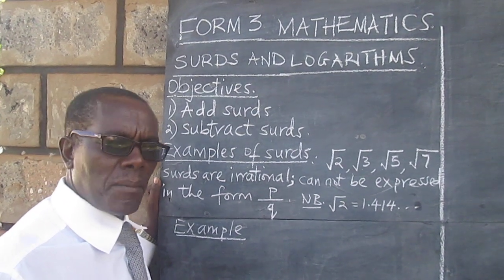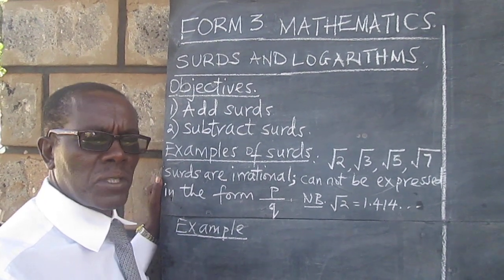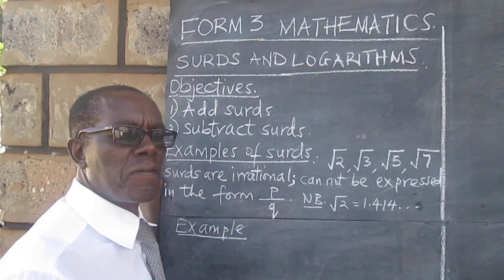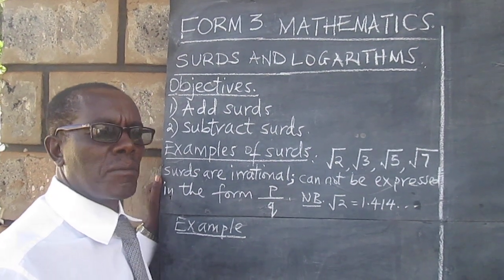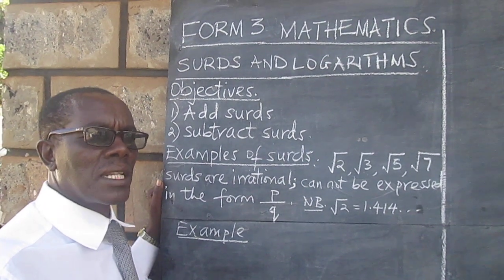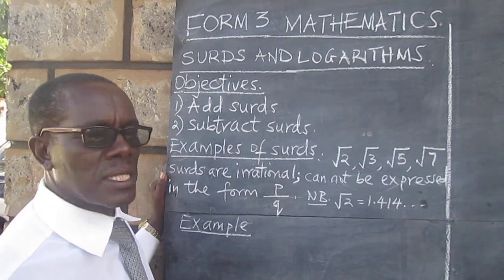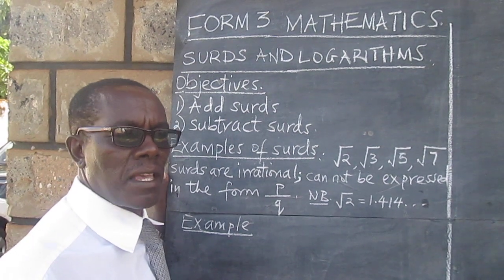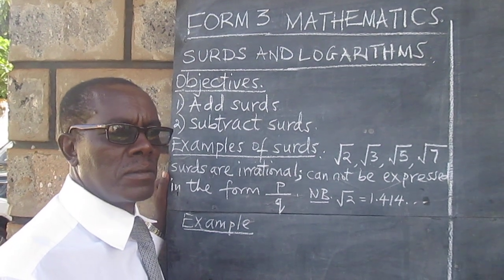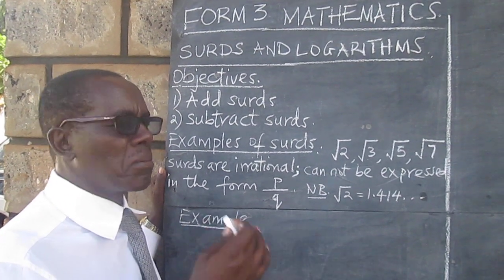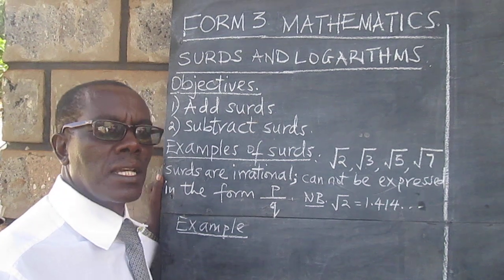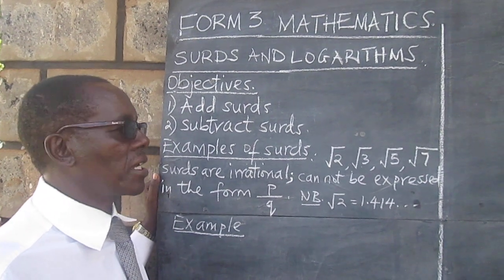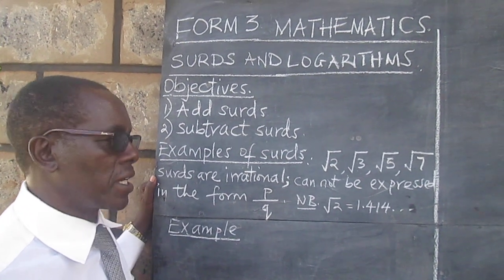If you take a number like square root of 14, you realize that it can still be simplified, because 14 can be expressed as 2 times 7. So it would be a combination of two surds: square root of 2 and square root of 7.